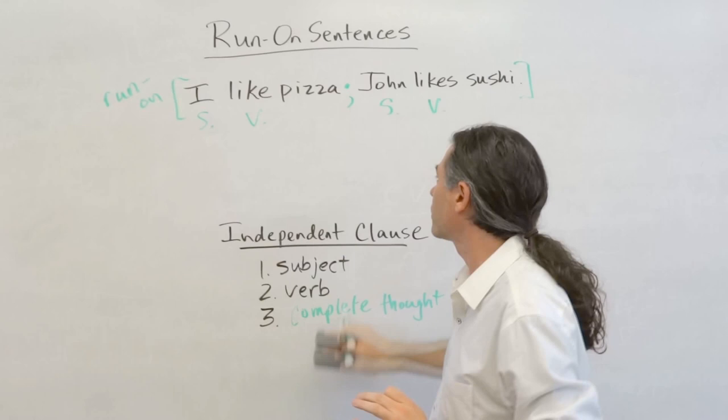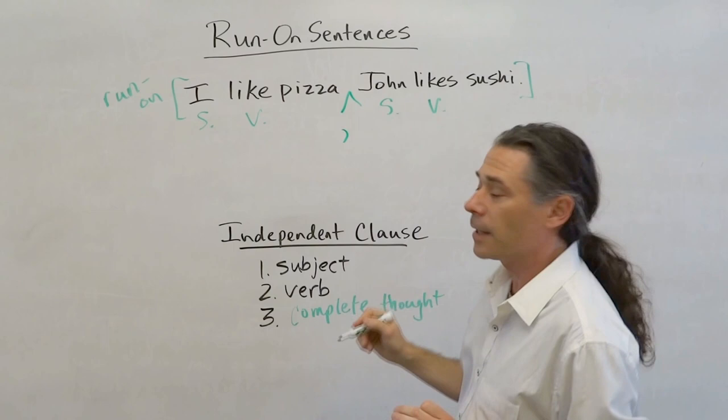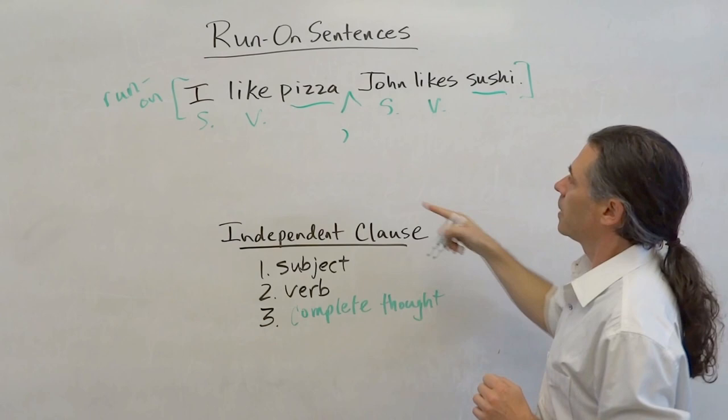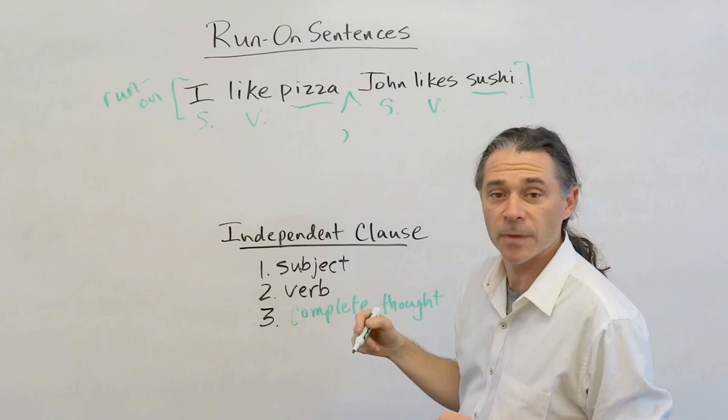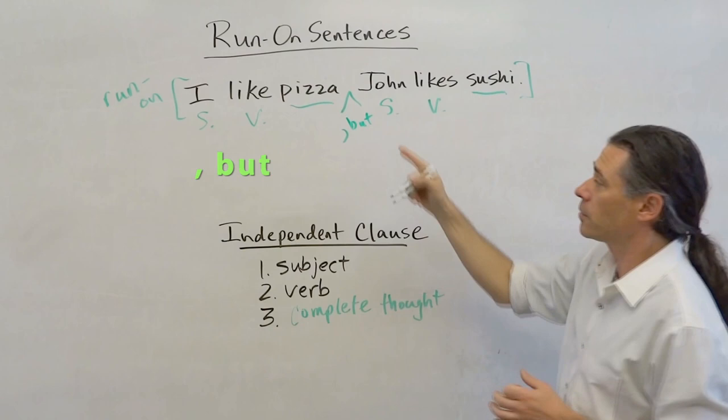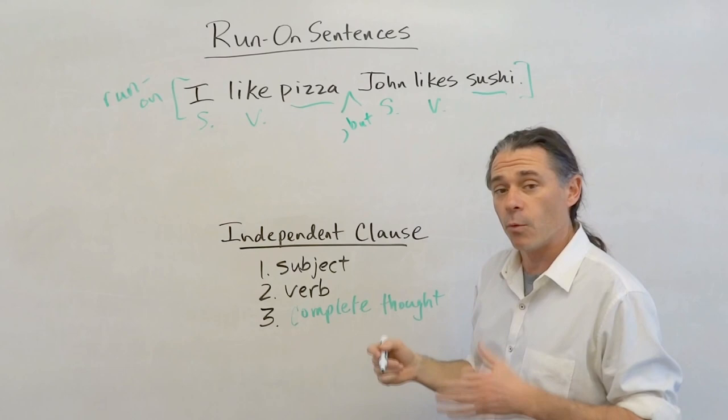Hold on. Somebody else just had another suggestion, and they too are right. We can add a comma and a coordinating conjunction. You guys know your coordinating conjunctions? If we're talking about pizza and sushi, these are very different things. So a good coordinating conjunction would be but. So you could say, I like pizza, comma, but John likes sushi. What we've done here is we have now corrected our run-on.